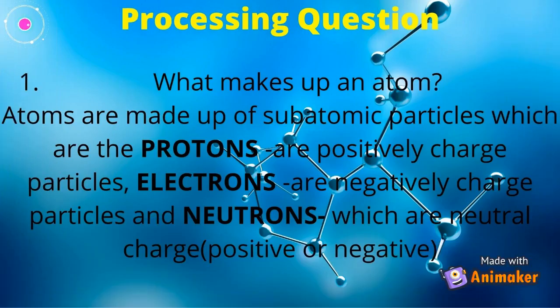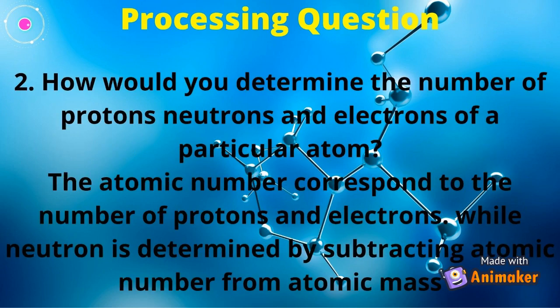What makes up an atom? Atoms are made up of subatomic particles: protons, electrons, and neutrons. Protons are positively charged particles. Electrons are negatively charged particles. And neutrons are neutral — neither positive nor negative. How would you determine the number of protons, neutrons, and electrons of a particular atom? The atomic number corresponds to the number of protons and electrons, while the number of neutrons is determined by subtracting the atomic number from the atomic mass.